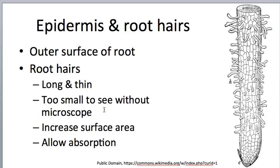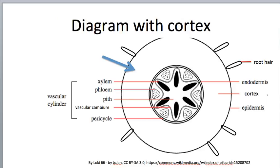Root hairs are thin — too small to see with the naked eye. Their function is to increase surface area. Because roots absorb things wherever the root contacts the soil, if there are a lot of projections, then there's a lot more area in contact with the soil, and hence more can be absorbed. So they allow absorption.